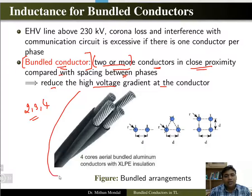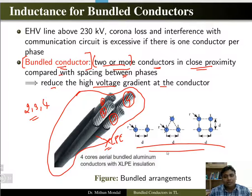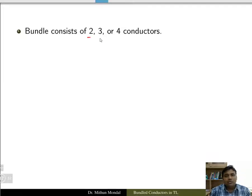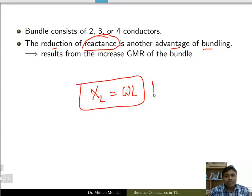Here you can see one bundle arrangement with four cores — core number one, two, three, and four — with XLPE insulation. Configurations can have two, three, or four conductors in a group, where small d is the distance between conductors and r is the radius of the conductor. Bundle conductors with two, three, or four conductors in a group will reduce the reactance of the transmission line, which is a big advantage of bundling, since XL = ωL.